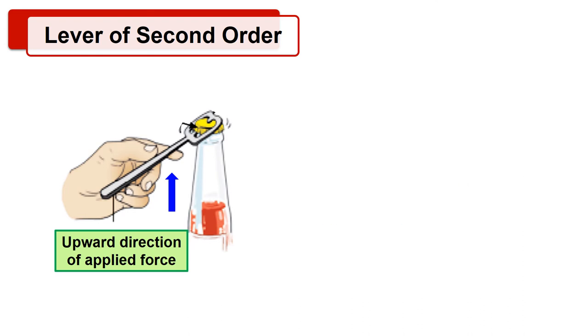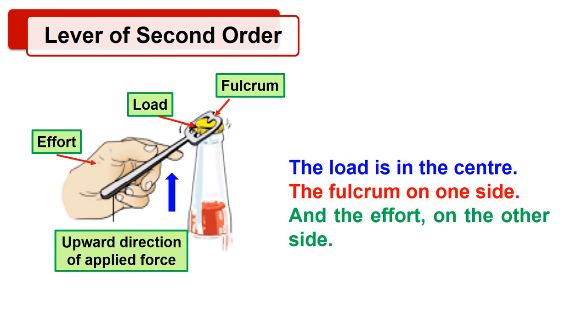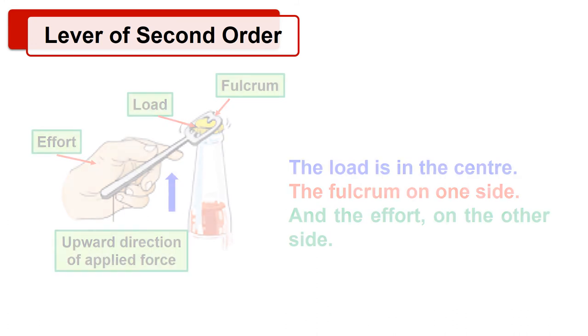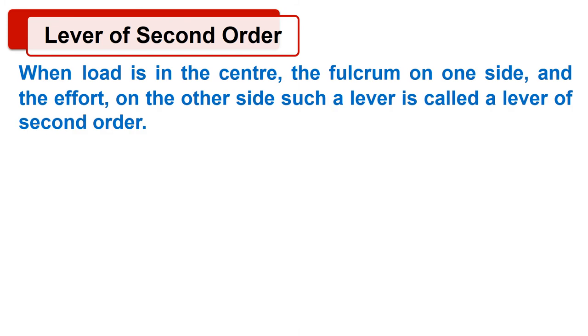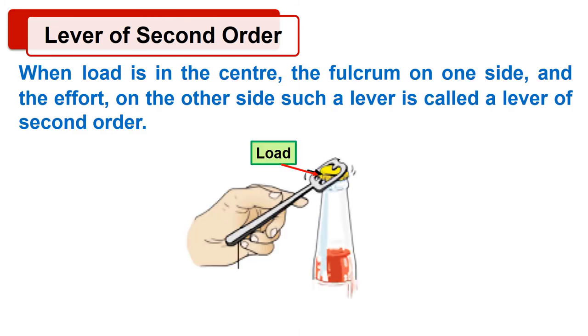Here we can see the bottle cap which acts as a load. The upper side of the opener acts as a fulcrum, and the force applied by our hand to pull the cap is effort. Here we can see the load is in the center, the fulcrum on one side, and the effort on the other side. We will define the lever of second order. When load is in the center, the fulcrum on one side, and the effort on the other side, such a lever is called a lever of second order.